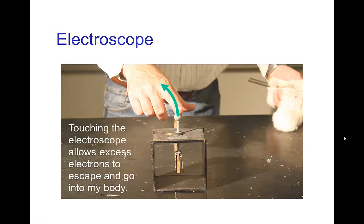Now, when I touch the electroscope, those electrons are trying to get away from one another, and so they easily escape into my body, and now the electroscope basically becomes neutral again, and the legs come back down.